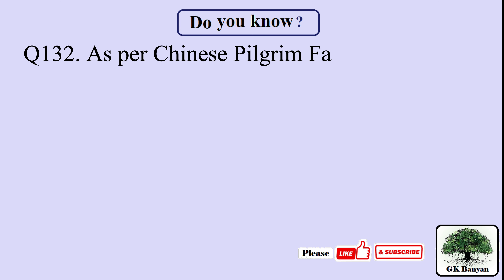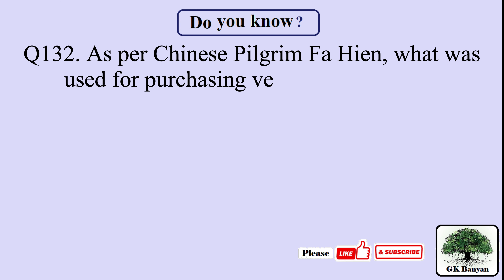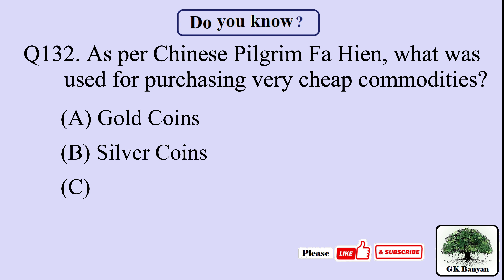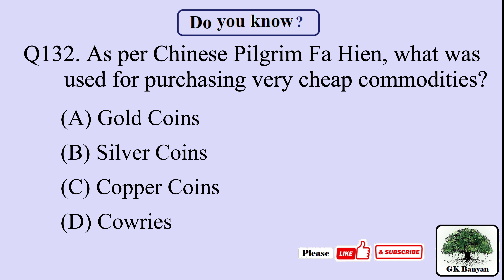Question 132. As per Chinese pilgrim Faxian, what was used for purchasing very cheap commodities? Your options are: A. Gold coins, B. Silver coins, C. Copper coins, D. Cowrie shells.